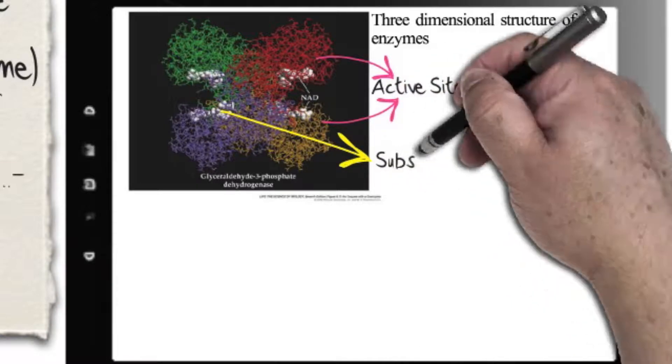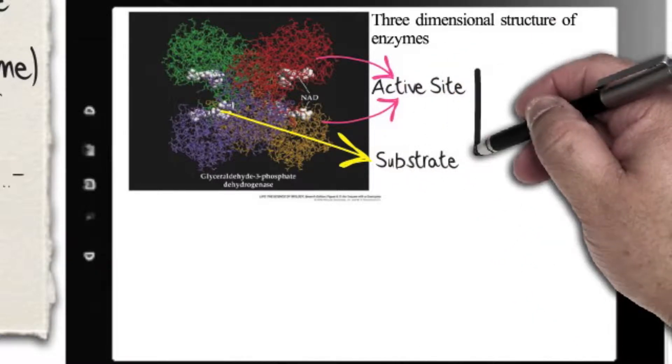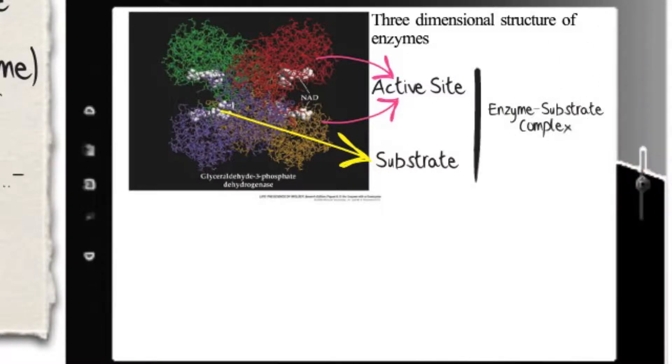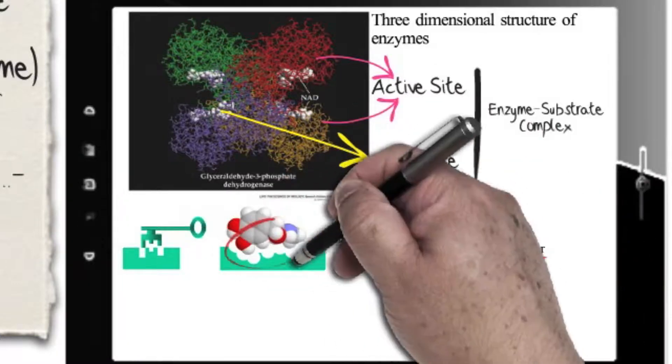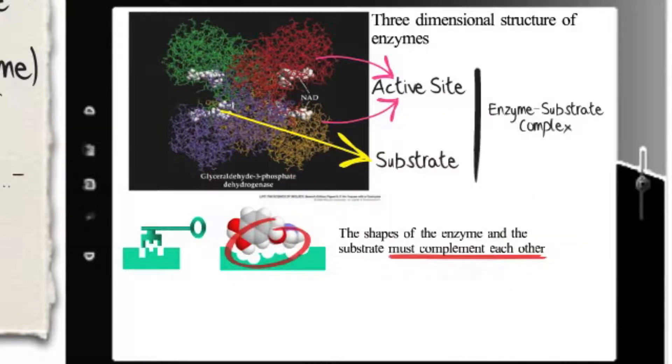The molecules that bind the active site of enzymes are called substrates, in which case they form what is known as an enzyme-substrate complex. For an enzyme to speed up a chemical reaction, the substrate or substrates must fit the active site reasonably well. In other words, the shape of the active site complements the shape of its substrate.